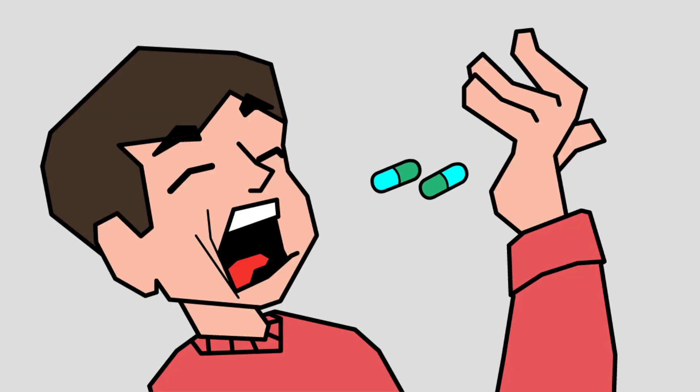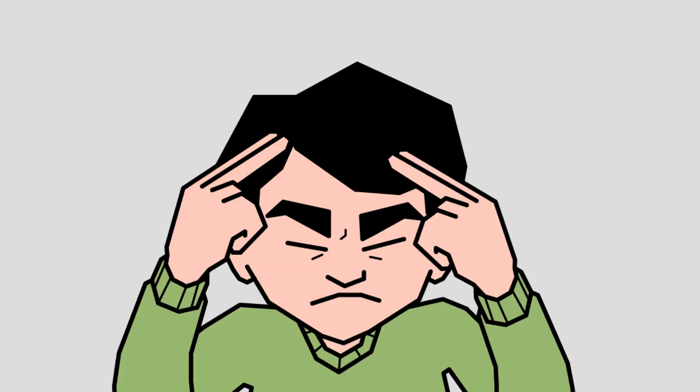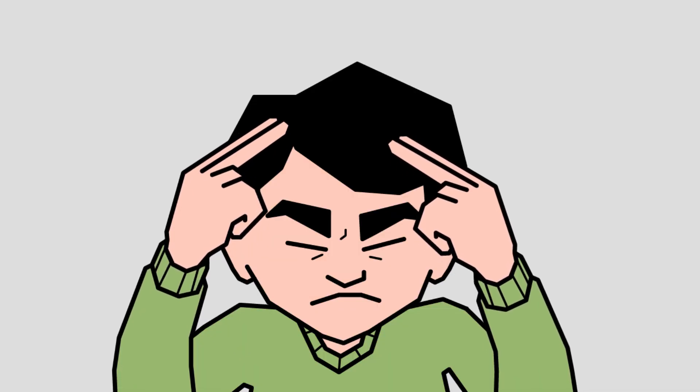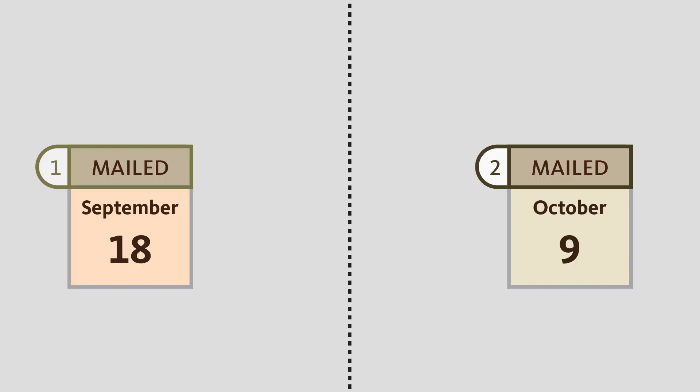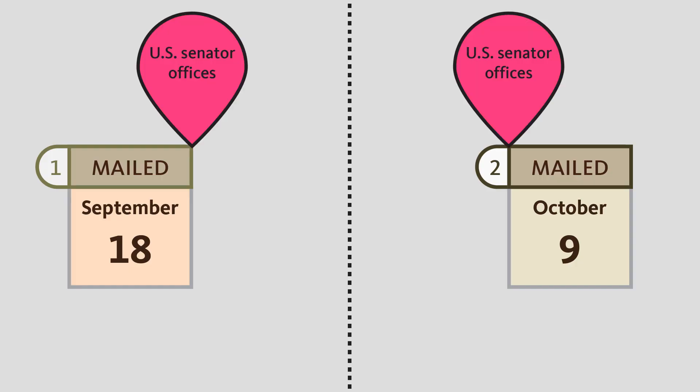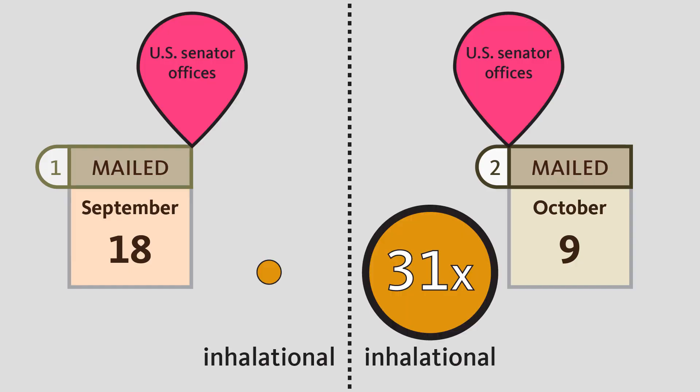The CDC estimated that 32,000 people initiated antimicrobial prophylaxis in order to prevent infection. Now let's apply epidemiological comparison to the anthrax example. Cases from the October 9th U.S. senator envelopes were 31 times as likely to be inhalational disease than cases from the September 18th envelopes, suggesting that the October 9th mailing was associated with more severe illness.